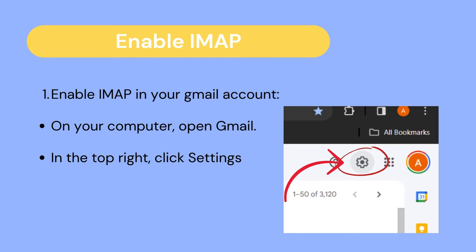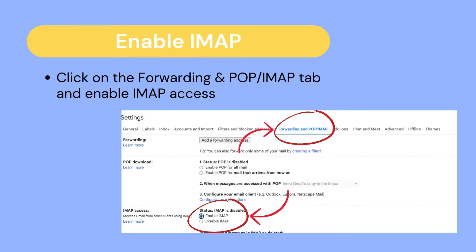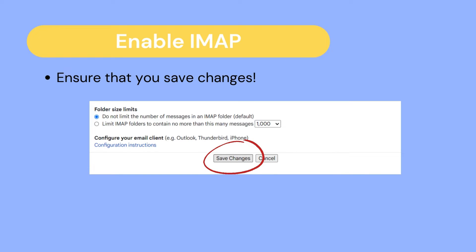To enable IMAP in your Gmail account, open your computer and open Gmail. In the top right corner of your screen, you should see the settings — click on it. After clicking on settings, click on 'See all settings.' This should take you to a page displaying all your settings. Click on the 'Forwarding and POP/IMAP' tab. In the IMAP access section, select 'Enable IMAP.' Scroll down and save your changes.